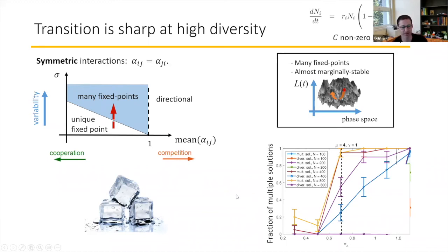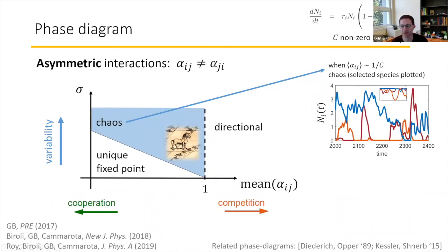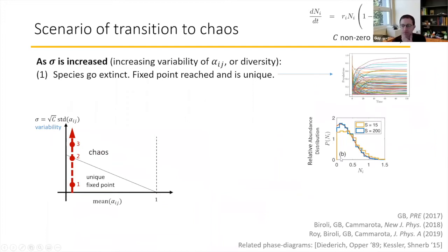In a different case where the interactions are not symmetric — where all the numbers are sampled independently with no relation between the effect of species i on species j and vice versa — what you find are persistent dynamical fluctuations that go on forever. We now know and understand that this is really chaos on a very high dimension.